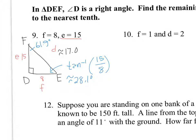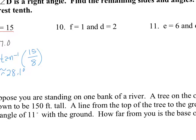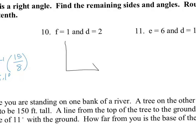For number 10, draw the right triangle with the right angle at D. Side f opposite F is 1, and side e is 2. Using a squared plus b squared equals c squared, the remaining side is the square root of 3. Using tangent inverse gives the angle as exactly 30 degrees, and the other angle is 60 degrees. This is a 30-60-90 triangle — the short side is half the hypotenuse and the long side is the short side times root three.